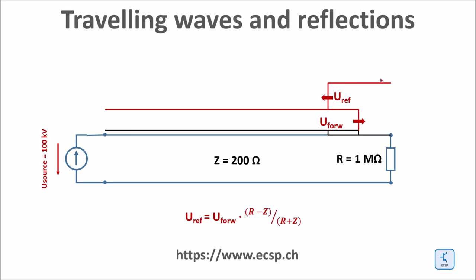Here is the formula of the reflected voltage wave in function of the forward wave, the line impedance and the termination resistance. For the current you get the same formula as for the voltage but watch the minus sign here.